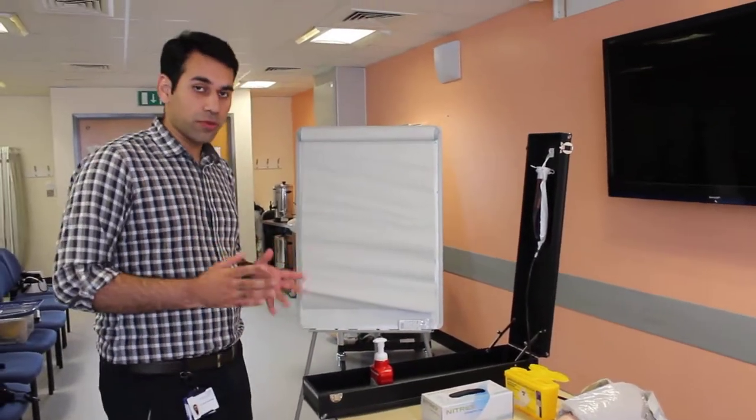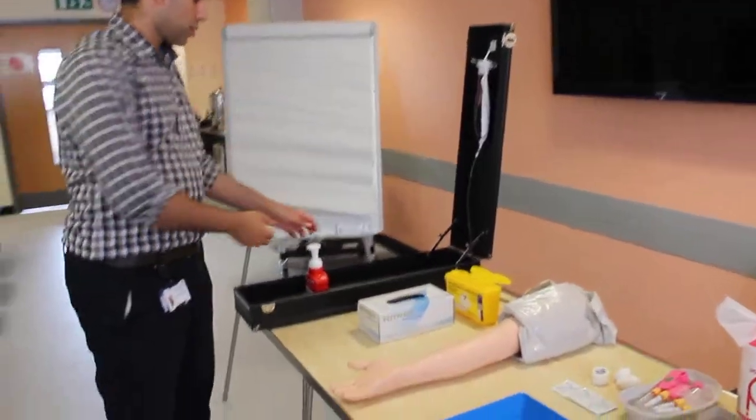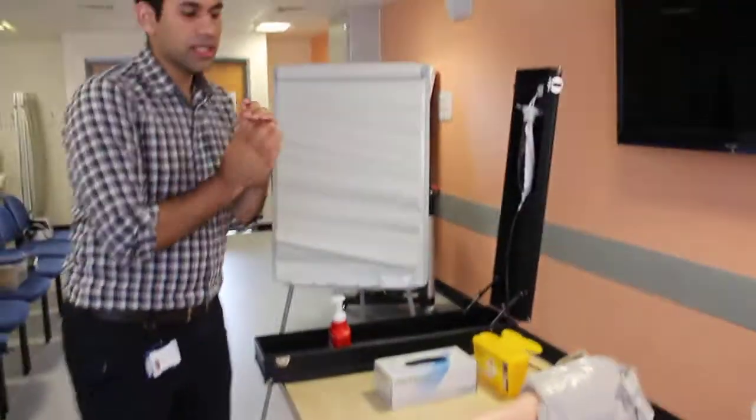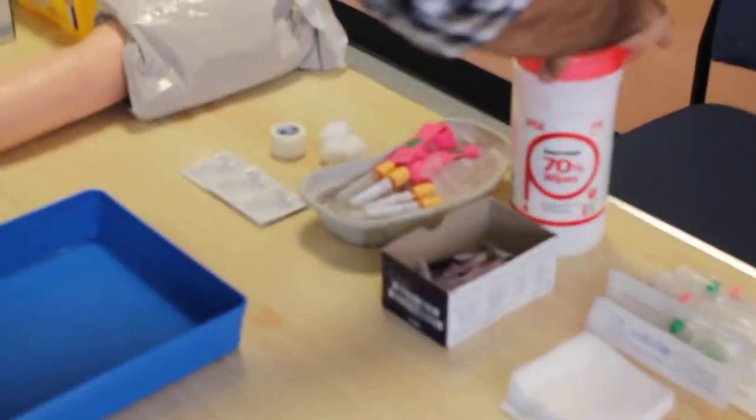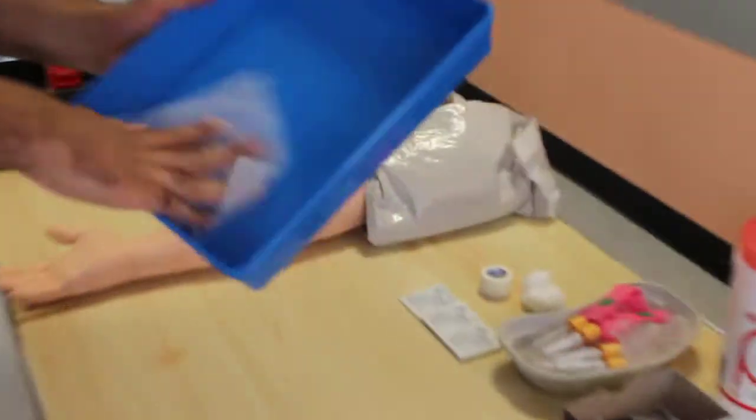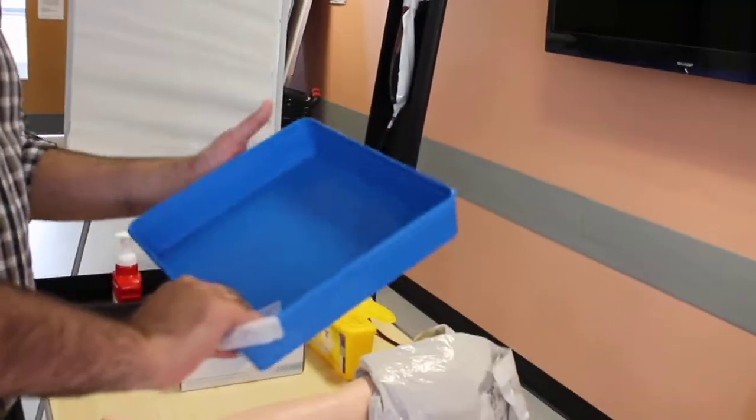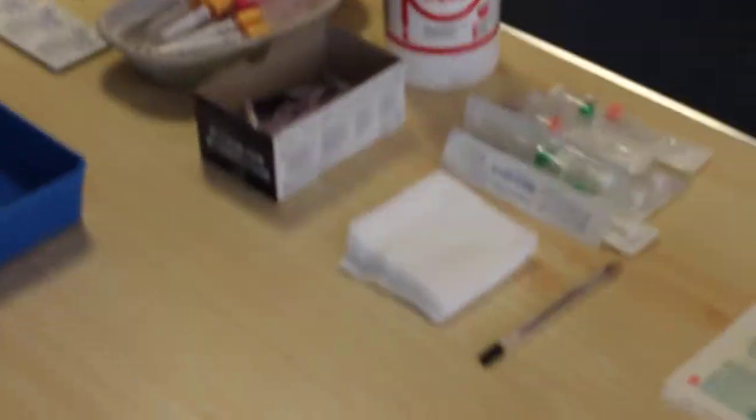I'm going to perform the venopuncture now. Go to the patient, clean your hands, prepare your clean area and clean tray by taking some wipes. Clean the tray properly, go in the crevices to make sure it's properly cleaned, and throw this away in the clinical waste bin.